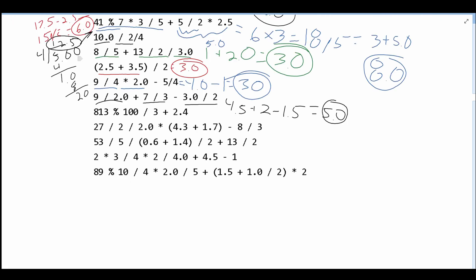Next, we have 813 modulus 100, which gives us the value of 13. We then divide this by 3, giving us 4. And then we are adding this to 2.4, which gives us the value 6.4.